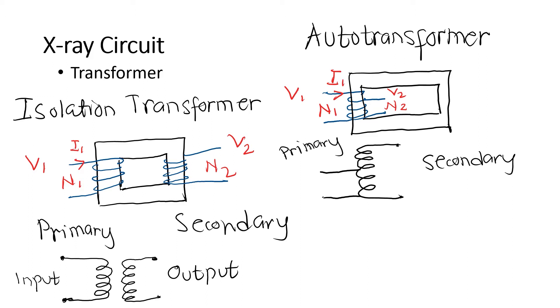In an auto transformer, portions of the same winding act as both the primary and secondary sides of the transformer. With one winding, an auto transformer adjusts the voltage automatically according to the load. The voltage and current ratio of transformers can be formulated the same as other two winding transformers.